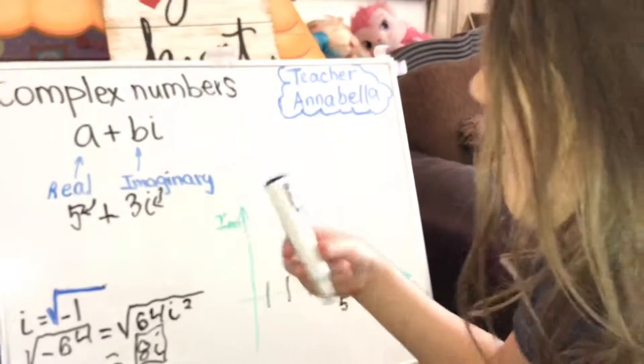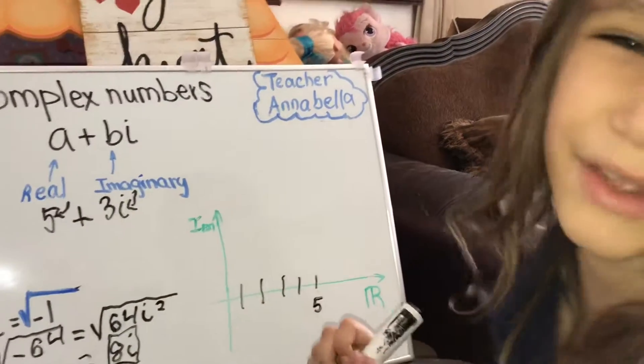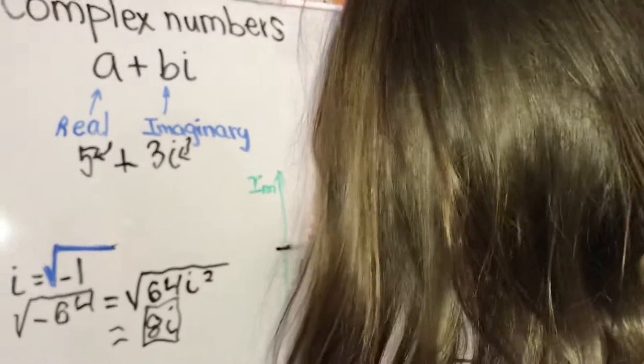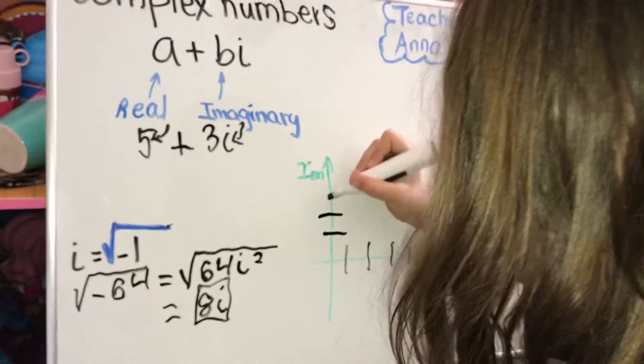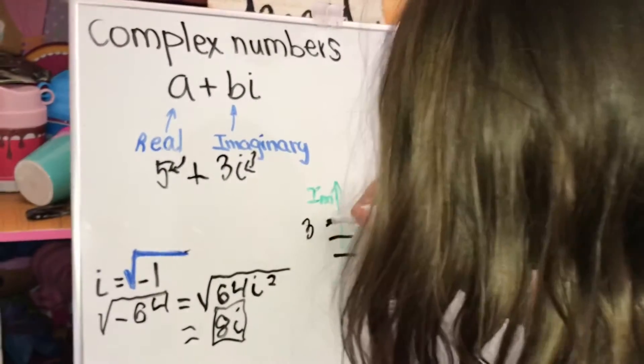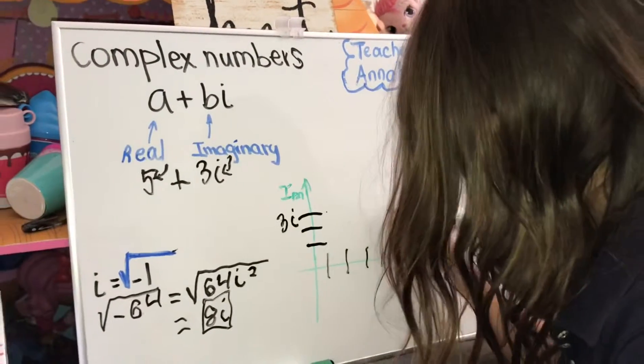And our imaginary number is three I. So we make three lines. One. Two. Three.